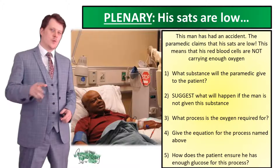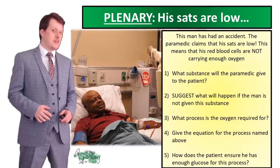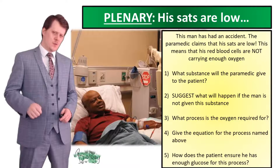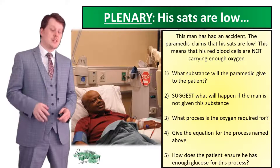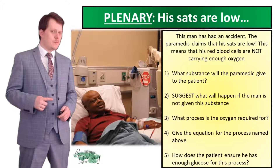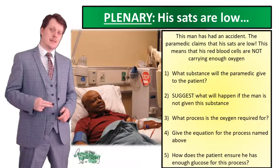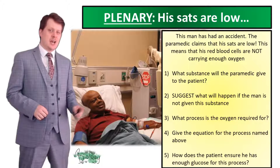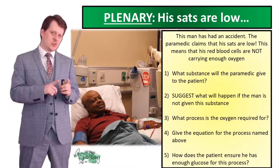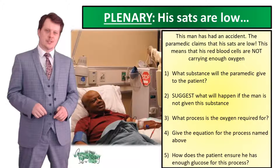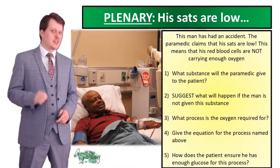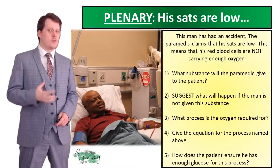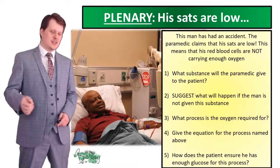This gentleman's sats are low. What substance are the paramedics going to give this patient? They're going to give him oxygen — he doesn't have enough in his red blood cells. If he didn't get this substance, he could end up with organ failure or he could die. The oxygen is required for aerobic respiration: glucose plus oxygen gives you carbon dioxide and water. To ensure he has enough glucose, he will consume it in his diet either as sugars or more complex carbohydrates which can be broken down into simple sugars.